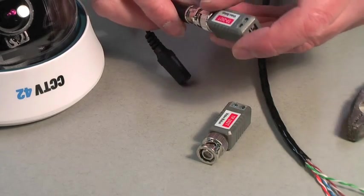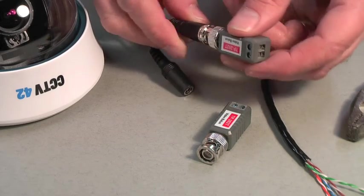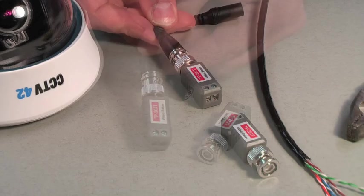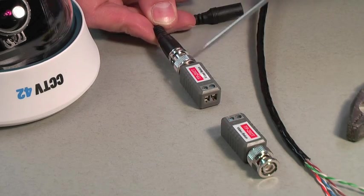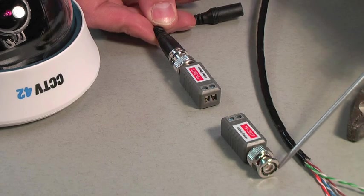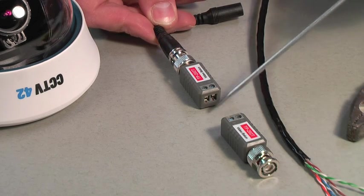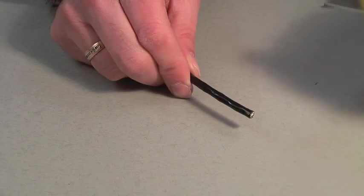Here we can see how the balun joins the BNC plug at the camera end. This shows an imaginary connection or link between the camera through the balun to the other balun plugged into the DVR with Cat5 cable in the middle.